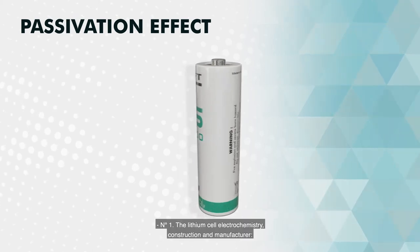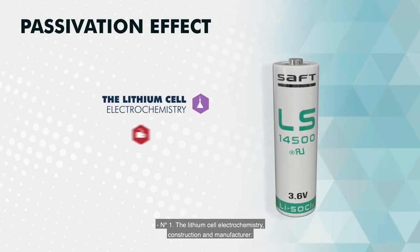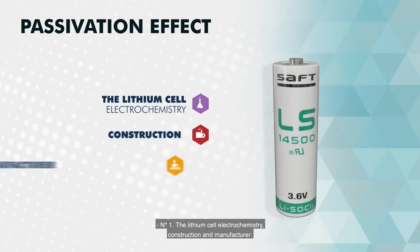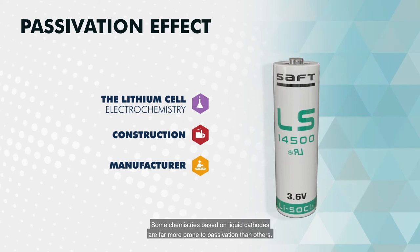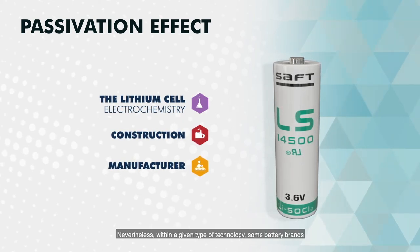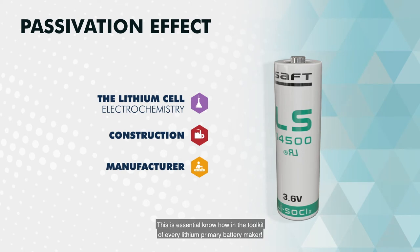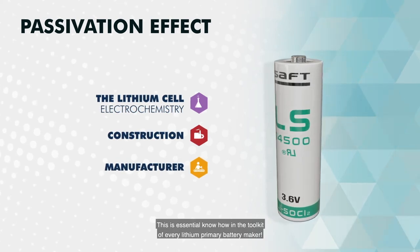Number one: the lithium cell electrochemistry, construction and manufacturer. Some chemistries based on liquid cathodes are far more prone to passivation than others. Nevertheless, within a given type of technology, some battery brands may display different levels of passivation. This is essential know-how in the toolkit of every lithium primary battery maker.